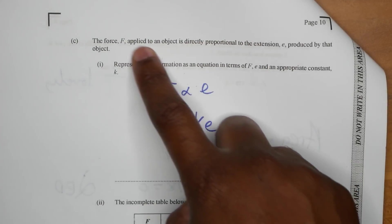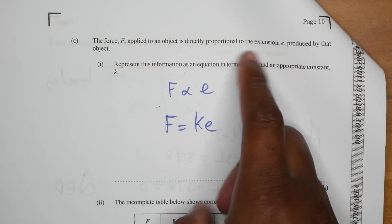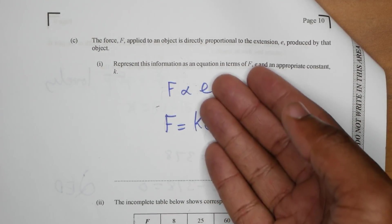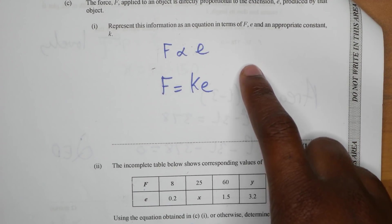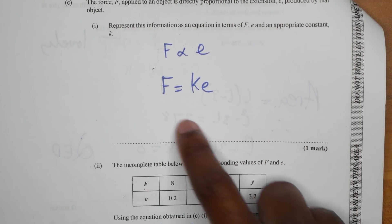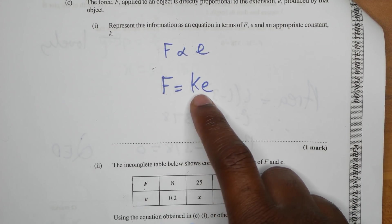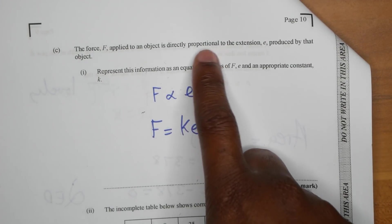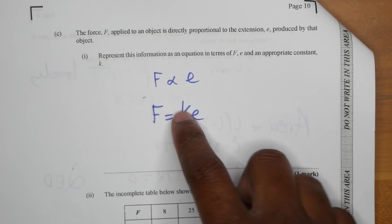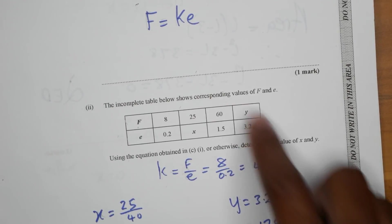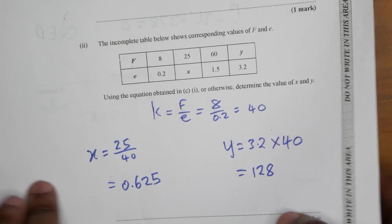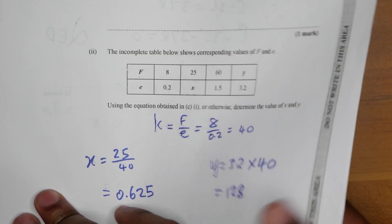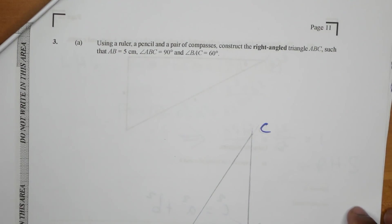People were complaining that physics was in maths, but it was very applicable — a nice little proportionality variation question. You get K, substitute, you get K, and you get your little answers there. Then you move on to question three.